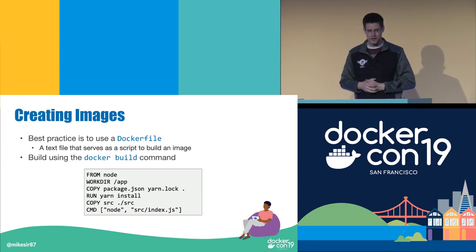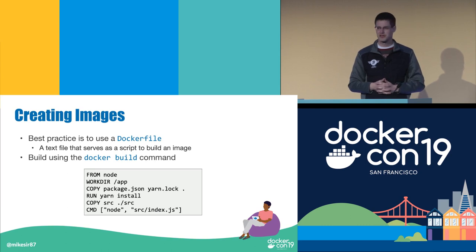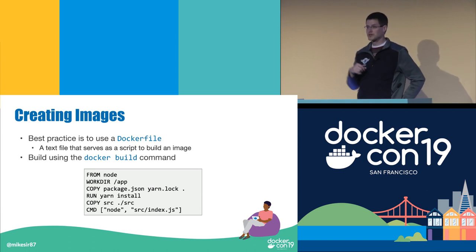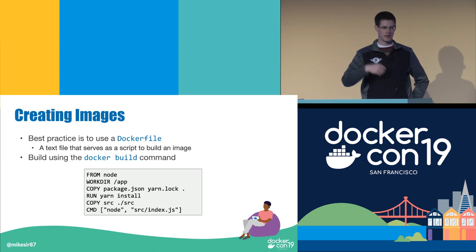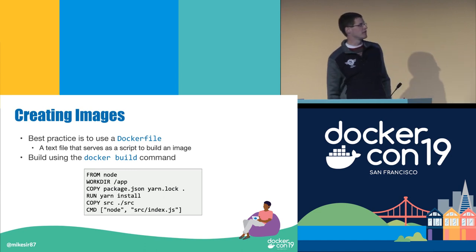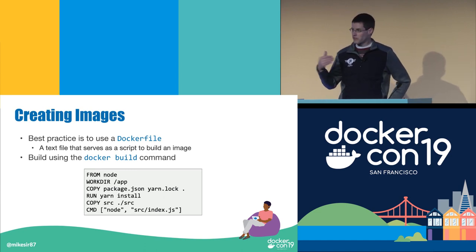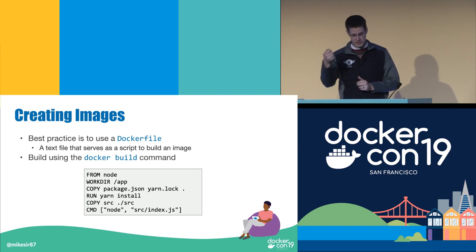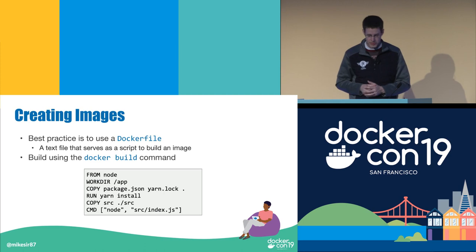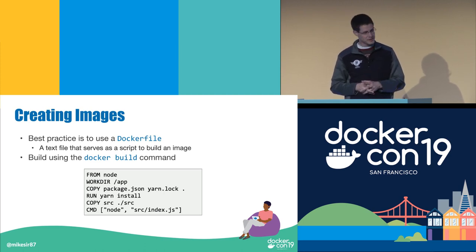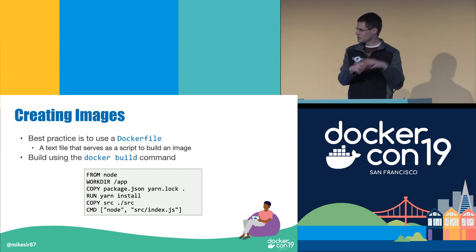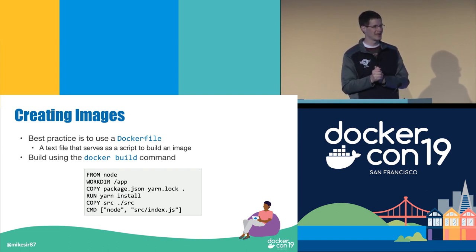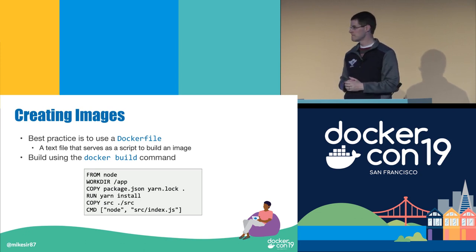The best practice is to use a Dockerfile, which is just a text file that contains various instructions. The cool thing about it being a text file is it can be version controlled and shared easily. We build it using Docker build. This example Dockerfile builds a Node app — starting from Node, copying in package.json which defines the app's dependencies, the yarn lock file which pins those dependencies, doing a yarn install to install them, copying in the source code, then specifying the default command to run whenever you run a container using this image.